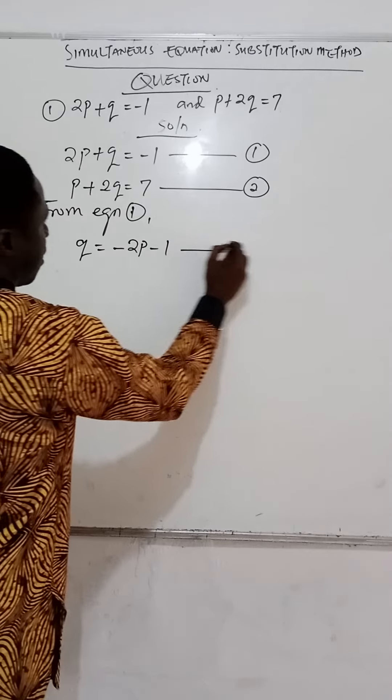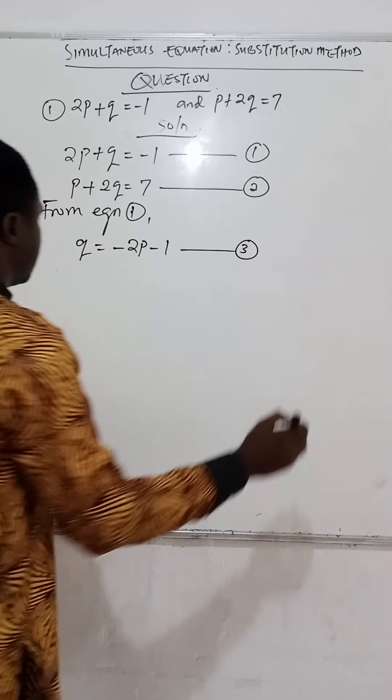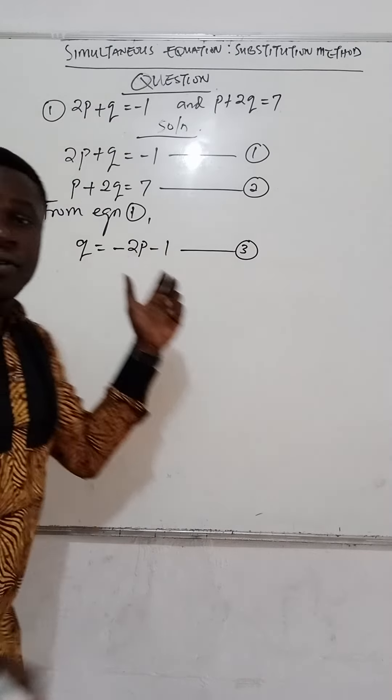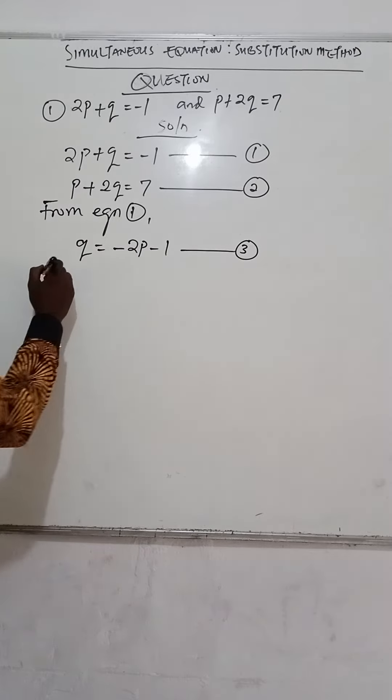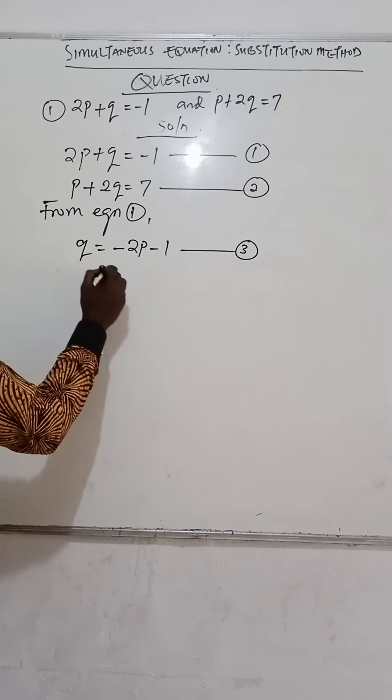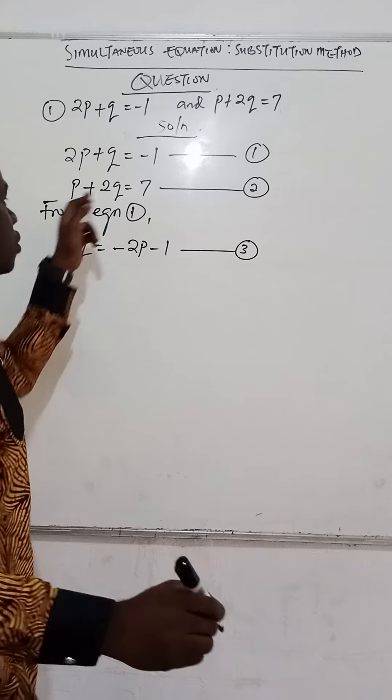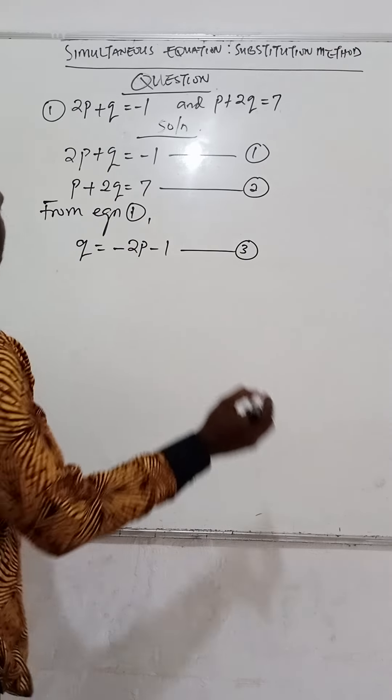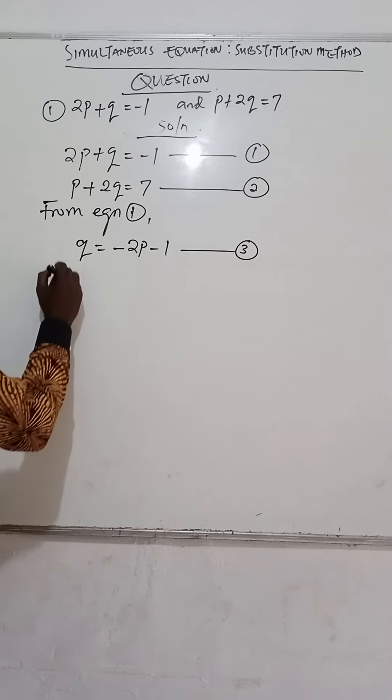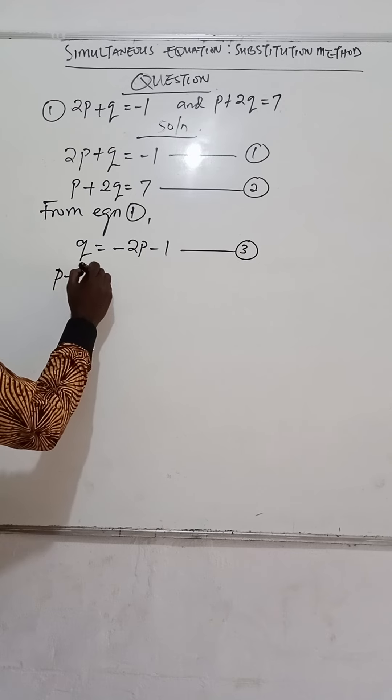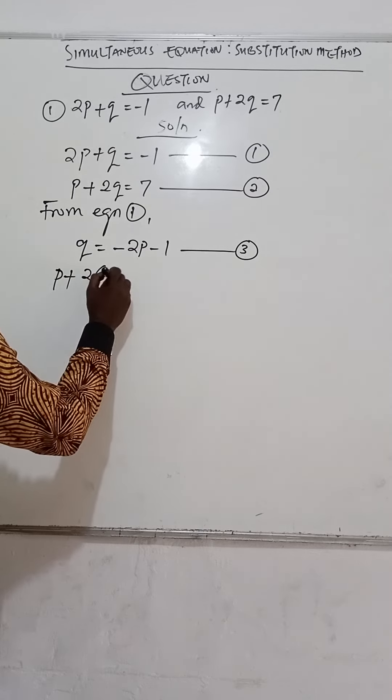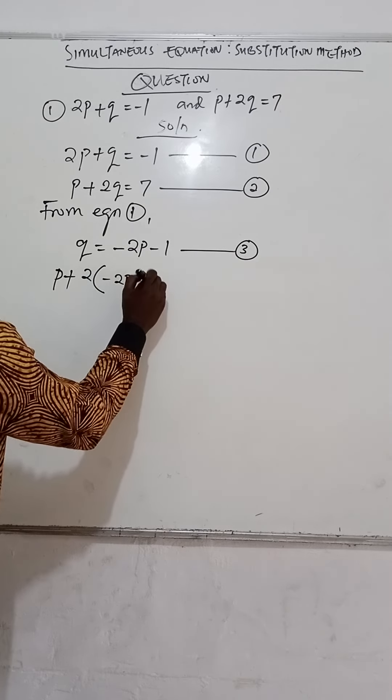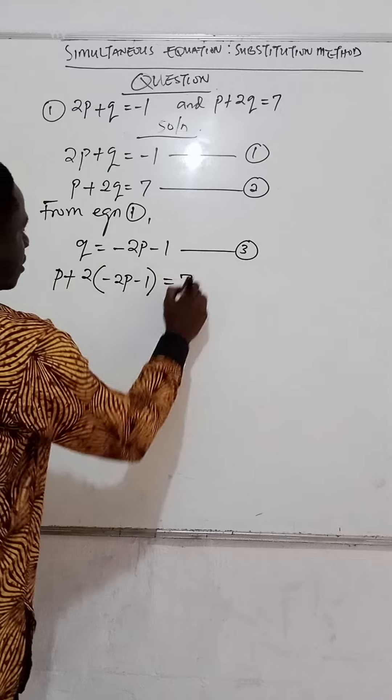We can call this equation 3. If we substitute the value of q in equation 3 into equation 2, anywhere we see q in equation 2, we'll substitute it with this value. So we'll have p + 2(-2p - 1) = 7.